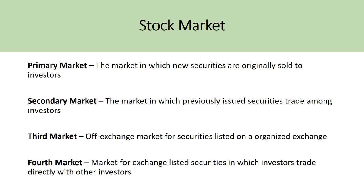The secondary market is the market in which previously issued securities trade among investors. For example, if you log on to your brokerage account and purchase shares in Ford, you're operating in the secondary market — those shares have already been issued and are now being traded among investors. The third market is an off-exchange market for securities listed on an organized exchange, and the fourth market is where exchange-listed securities are traded directly between investors, usually through electronic means. The third and fourth markets won't be covered in this video.